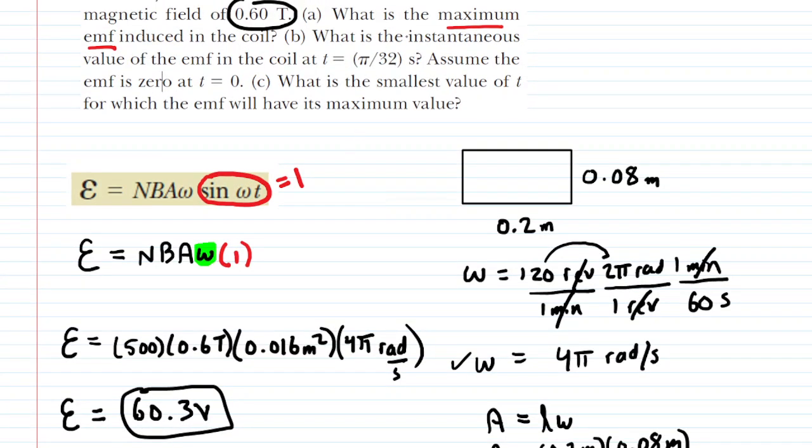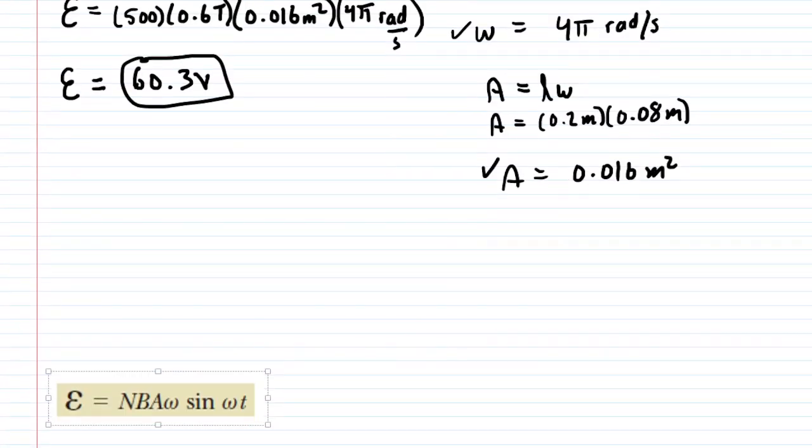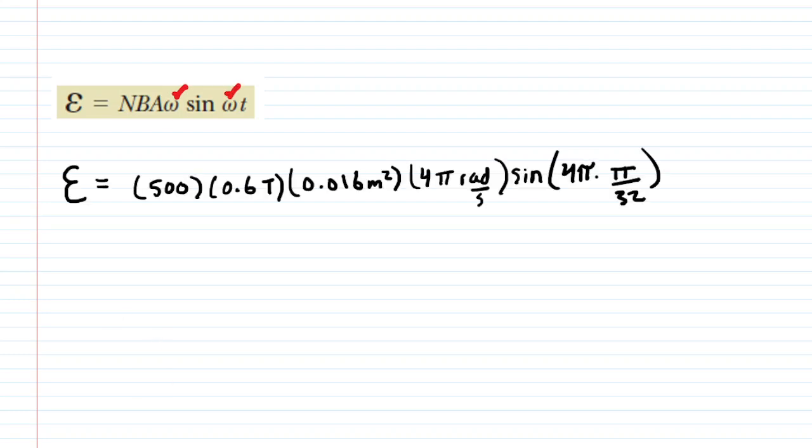We can look at part B which asks us for the instantaneous value of the EMF when time is π over 32 seconds. We're going to use the same equation, but this time we are doing instantaneous, not necessarily the maximum value. So we're not going to set the sine term equal to one, we're just going to plug in all of the values. The time was given to us in the question as being π over 32. So we'll go ahead and plug in. Everything else is the same. Notice omega shows up twice in the equation but we use the value determined earlier. The time was π over 32 right there. You do want to make sure your calculator is set in radian mode. When we do that and punch it in, we get about 56.9 volts. That is the correct answer to part B.